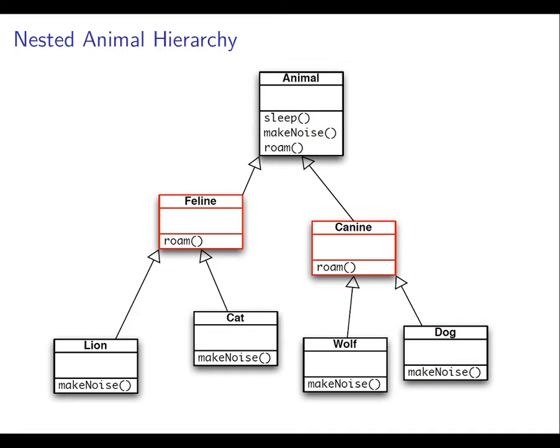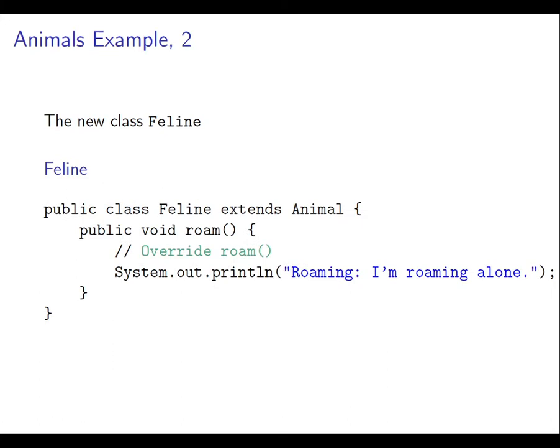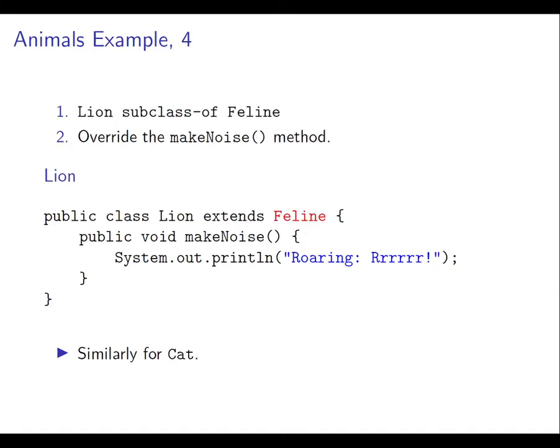So now Lion, for example, is inheriting sleep from Animal, Roam from Feline, and implementing MakeNoise itself. The code ends up looking like this: Animal hasn't changed. The new class Feline overrides the Roam method, as does the new class Canine. Lion now extends Feline rather than directly extending Animal, and that gives us the hierarchy that we saw in the picture.